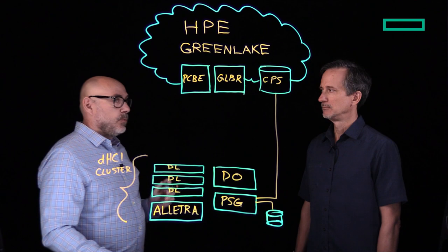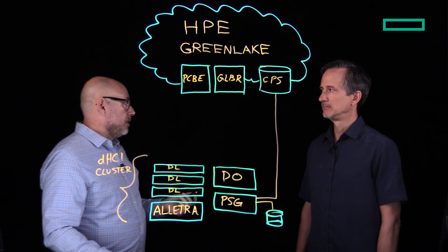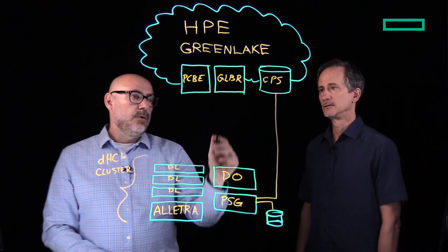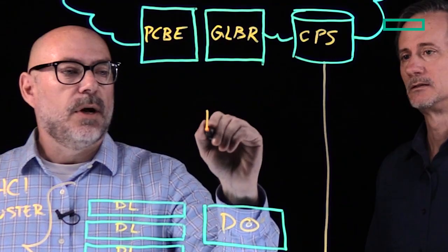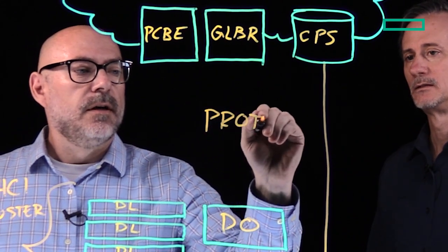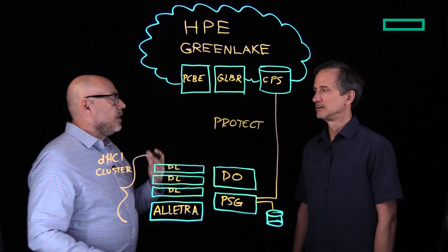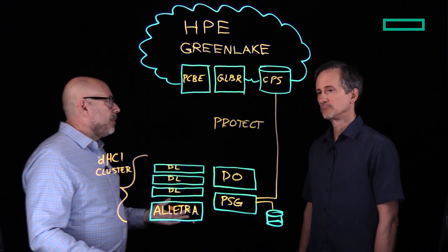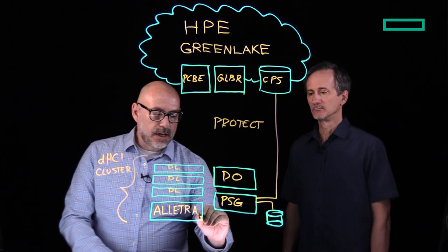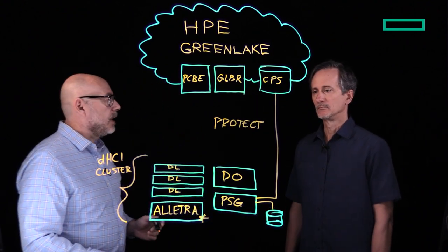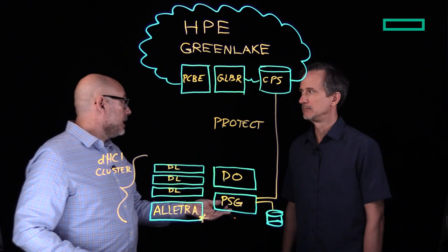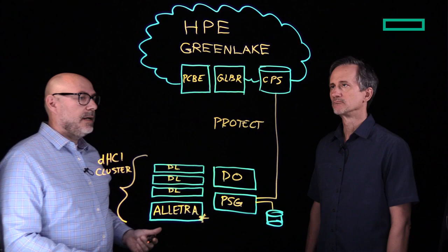Where the magic happens is where these two services start to talk to each other. Both of them are policy-driven, and in GreenLake for Backup and Recovery we can create a protection policy. That protection policy determines when we're going to take backups, where our backup targets are going to be — snapshots on the array, local backups, cloud backups — how long we're going to keep those around, when we're going to delete them if they can be deleted, and all sorts of stuff about how we protect the data.